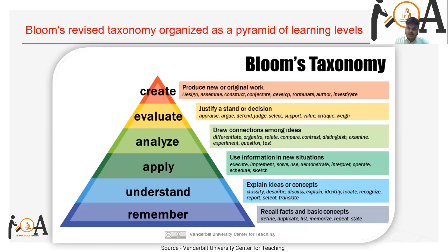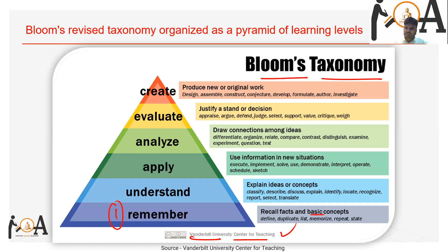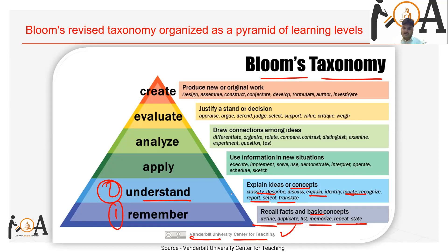Now we come to Bloom's Taxonomy revised version — the image is taken from Vanderbilt University Center for Teaching, and all credit goes to them. The revised version also has six levels in a pyramid. The first level is Remember: recall facts and basic concepts — define, duplicate, list, memorize, repeat. The second level is Understand: explain ideas or concepts — classify, describe, discuss, explain, identify, locate, recognize, report, select, and translate.